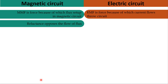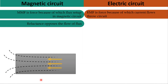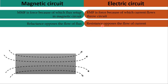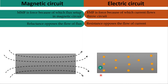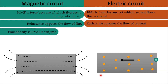Reluctance opposes the setting up of flux in a magnetic circuit. It is basically a property which opposes flux from establishing. Similarly, in an electrical circuit, resistance is the property of a material which opposes the flow of current. So we can compare reluctance in a magnetic circuit to resistance in an electrical circuit.